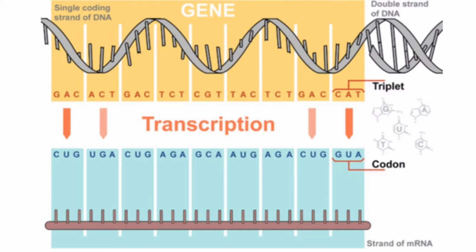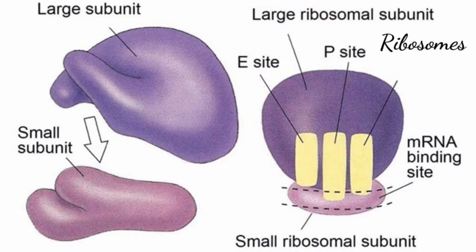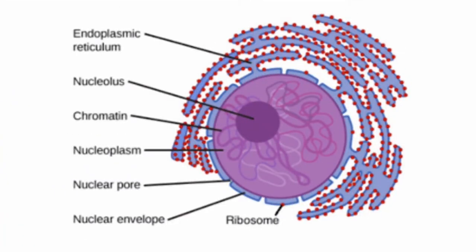Once the mRNA enters the endoplasmic reticulum, it will move into another organelle — one of the few organelles without a membrane — known as the ribosome. Ribosomes' main purpose is taking genetic information like mRNA and translating it into proteins, making ribosomes responsible for protein synthesis. These organelles are extremely tiny and are sparsely spread out in the cell's cytoplasm, where they are known as free ribosomes. Some of them are on the surface of the endoplasmic reticulum, and that is how they receive some of the mRNA.